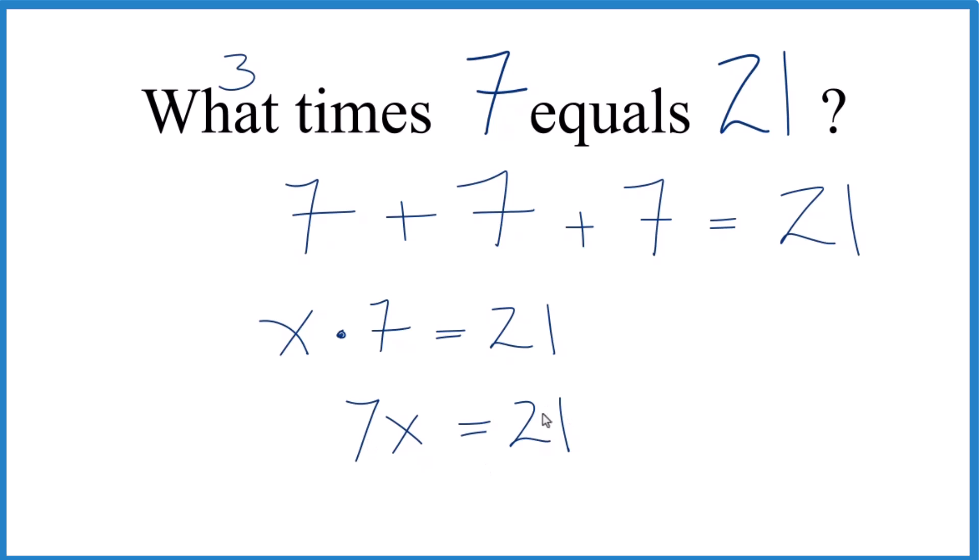We want to get x by itself. So we divide both sides by 7 here, and 7 cancels out. x equals 21 over 7. And 21 divided by 7, that's 3. 3 times 7 is 21.